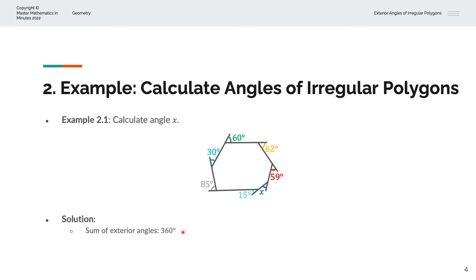So we can calculate x as equal to 360 degrees (the total angle) minus 85, minus 30, minus 60, minus 62, minus 59, and minus 15. That gives us x is equal to 49 degrees.